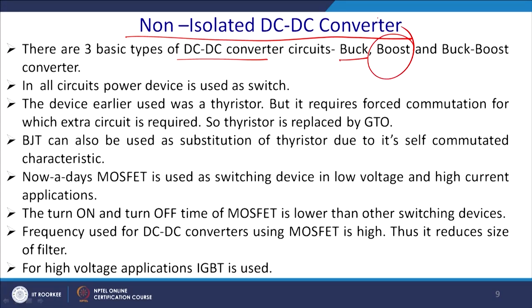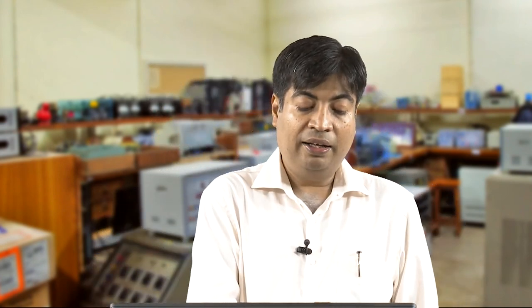There are three types of DC-to-DC converter circuits depending on the application. The buck converter is equivalent to a step-down transformer in AC. The boost converter is equivalent to a step-up transformer. The buck-boost converter is like a tap-changing or auto-transformer — it can both boost and buck the voltage.